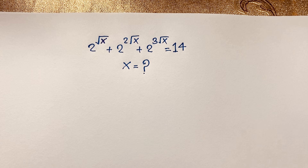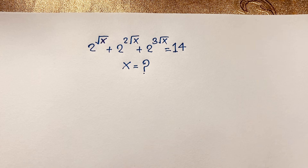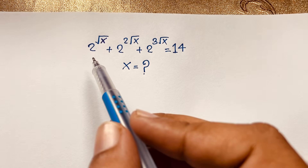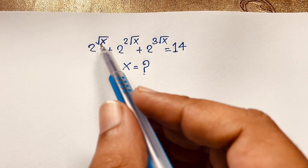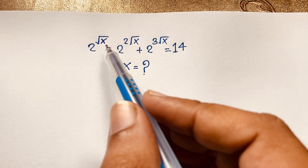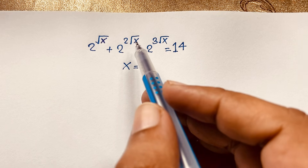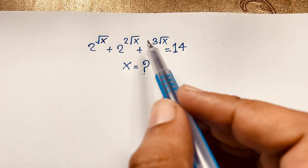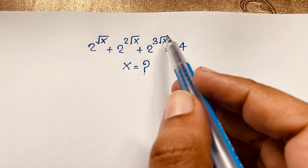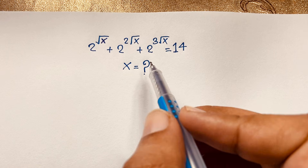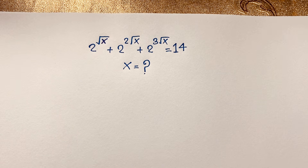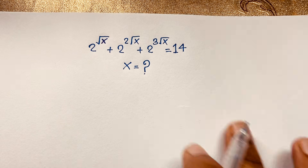Hello everyone, welcome to Russia's Classroom. Today we solve an interesting exponential math olympiad question: 2 to the power square root x, plus 2 to the power 2 square root x, plus 2 to the power 3 square root x, is equal to 14. What is x? How to solve this interesting math olympiad question?